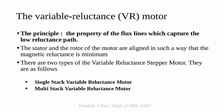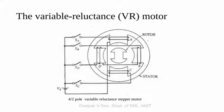Variable reluctance stepper motors are classified into two types: single stack variable reluctance motor and multi-stack variable reluctance motor. In this figure, what is shown is a 4 by 2 pole variable reluctance stepper motor, which is a single stack arrangement.